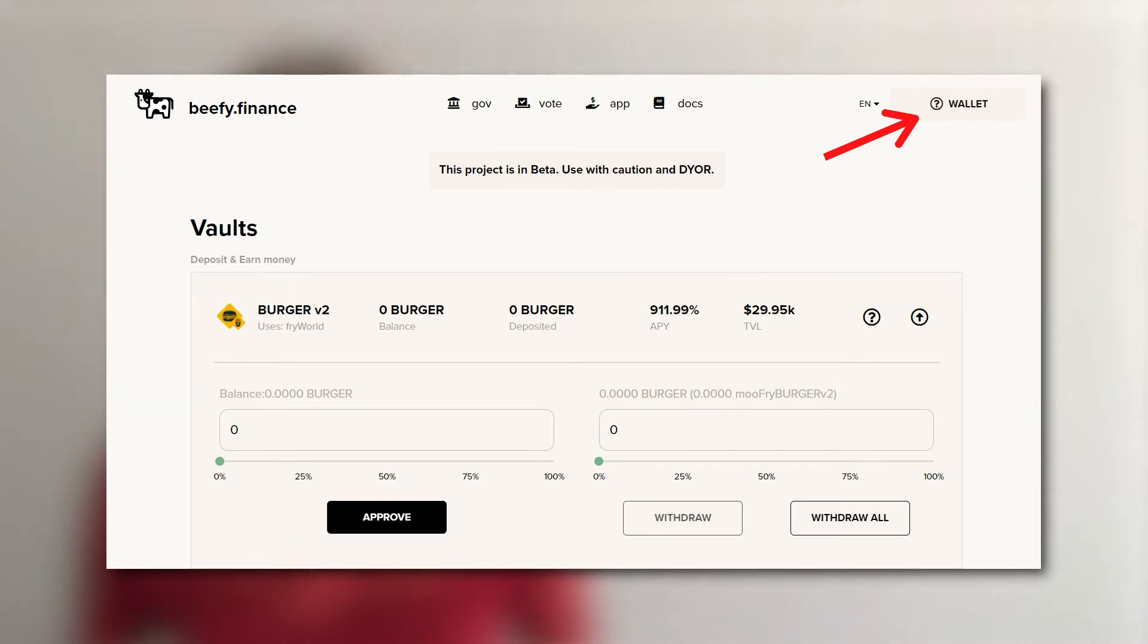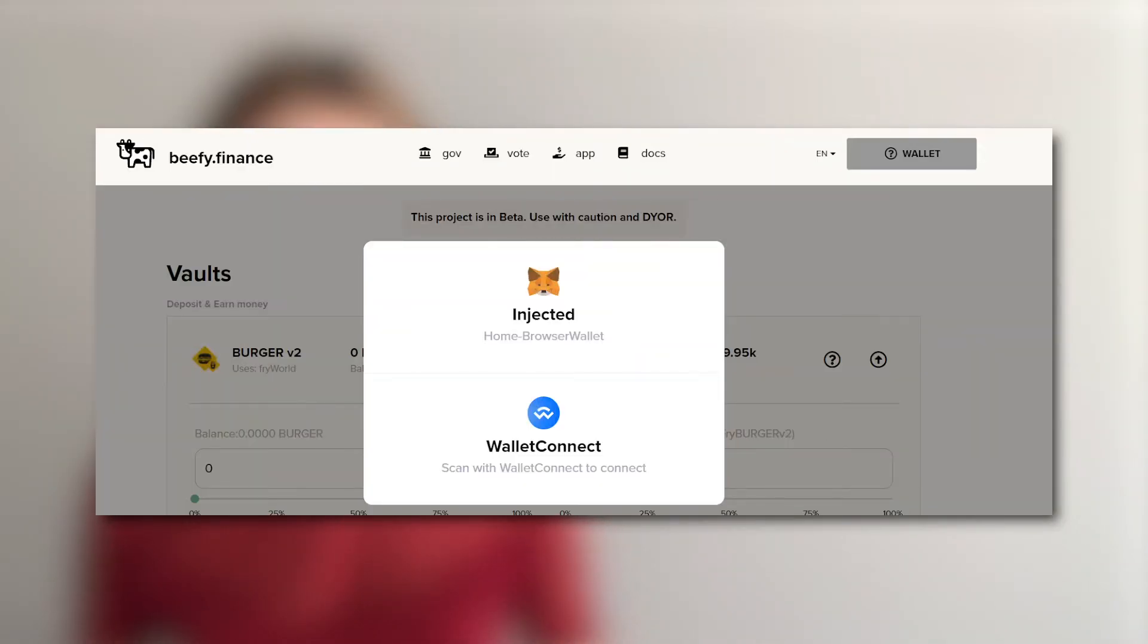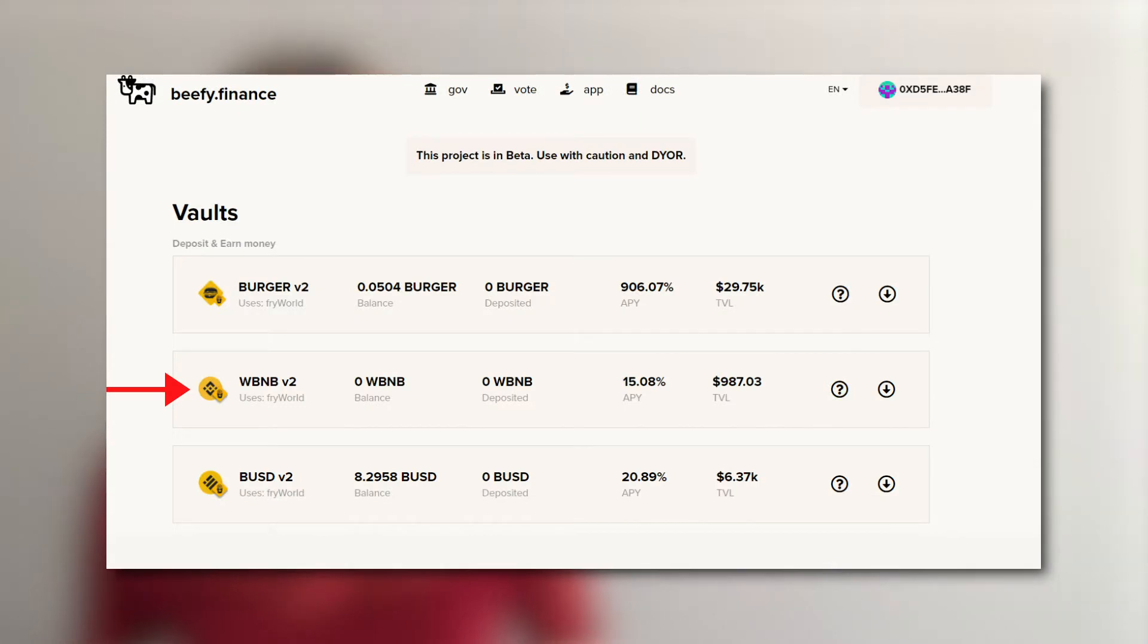Go to Bifi app and click on Wallet. Choose your favorite wallet. Choose which vault you want to deposit into, for example the WBNB V2 vault.